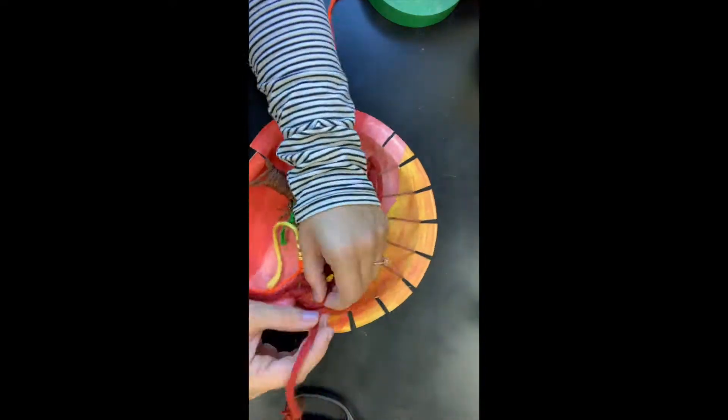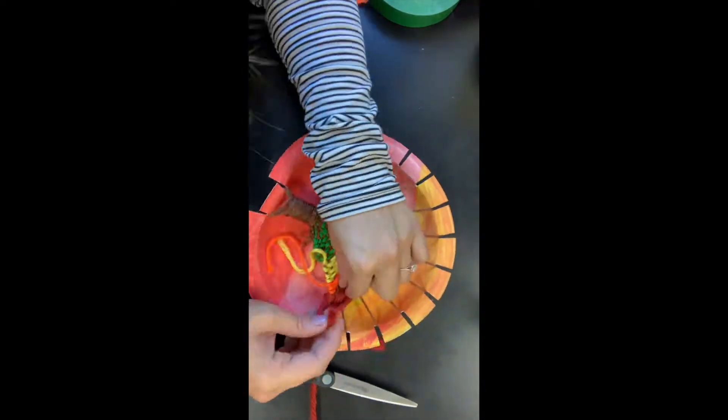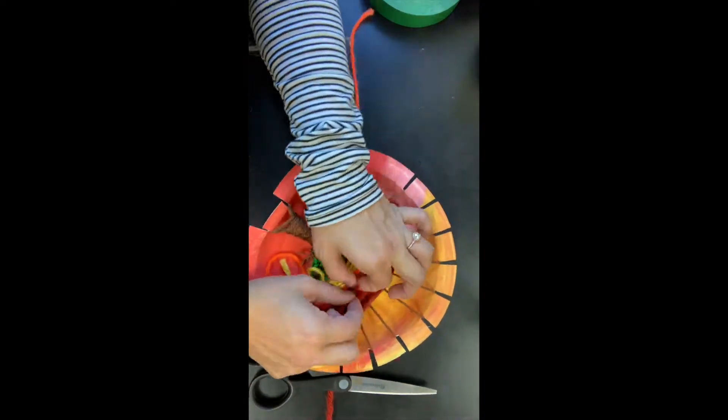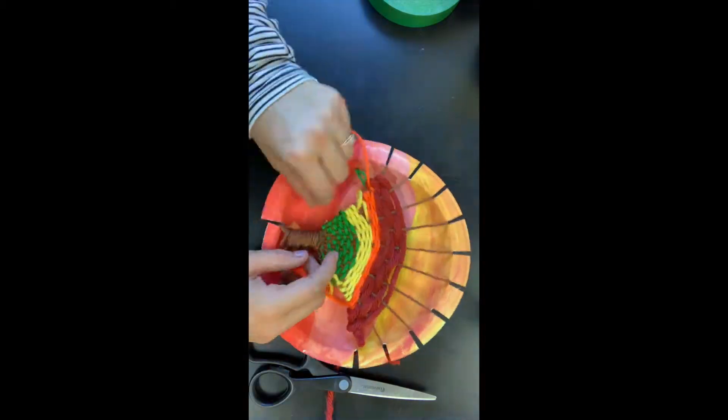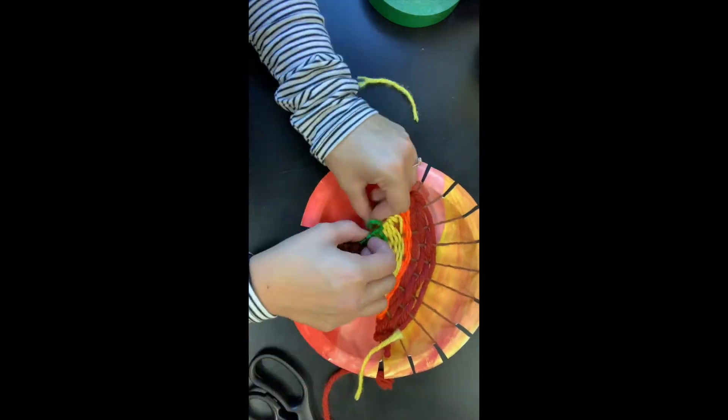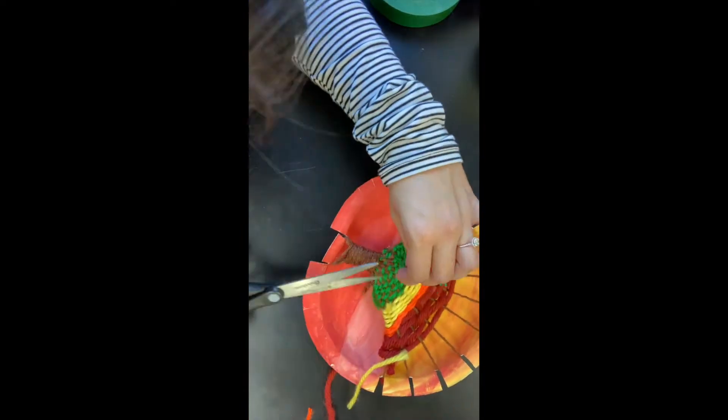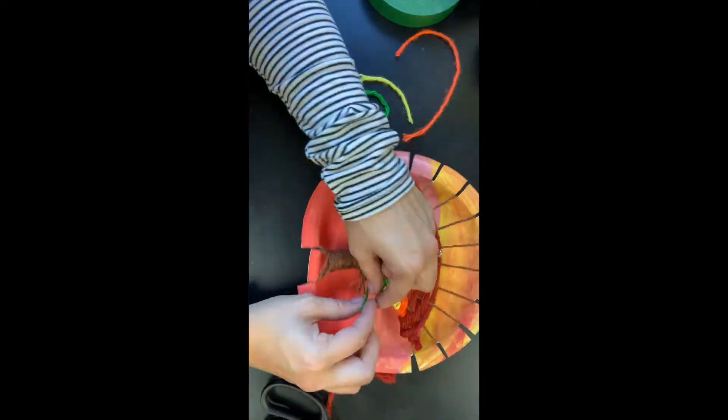When you're ready to stop weaving you can tie off the end or tuck them in and cut off any extras. Just be careful not to cut too close so that it doesn't fall apart. Can't wait to see what you guys create. Good luck.